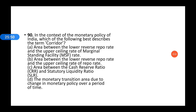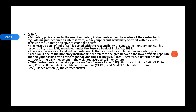Next question: In the context of monetary policy of India, which of the following best describes the term 'LAF Corridor'? The first option — the area between the lower reverse repo rate and the upper ceiling rate of the marginal standing facility — is the correct answer. Option A is correct.